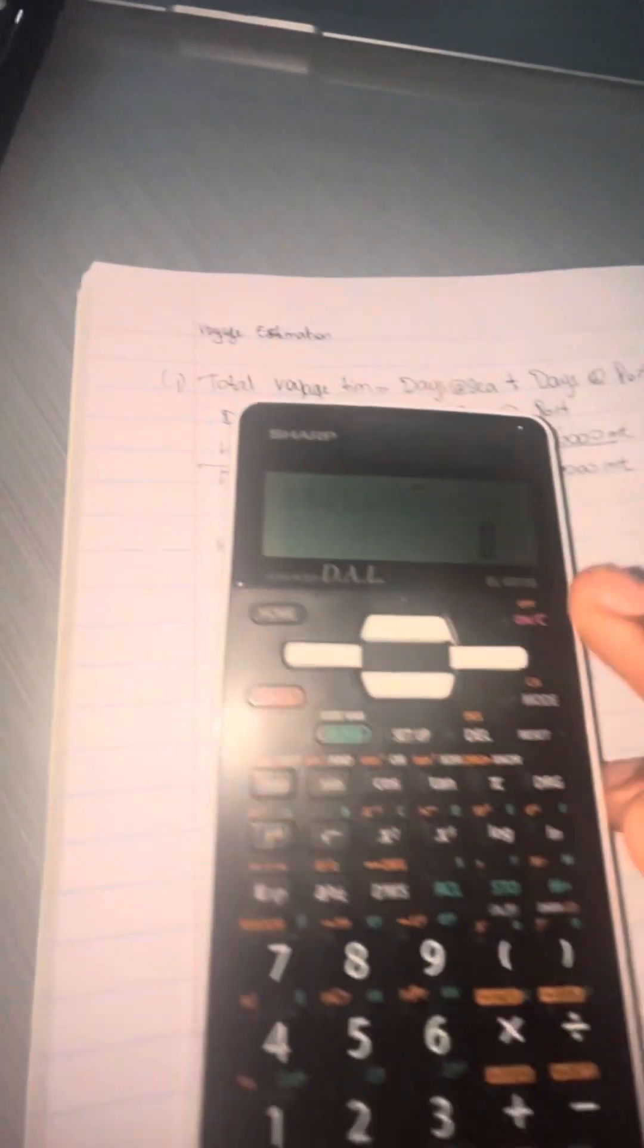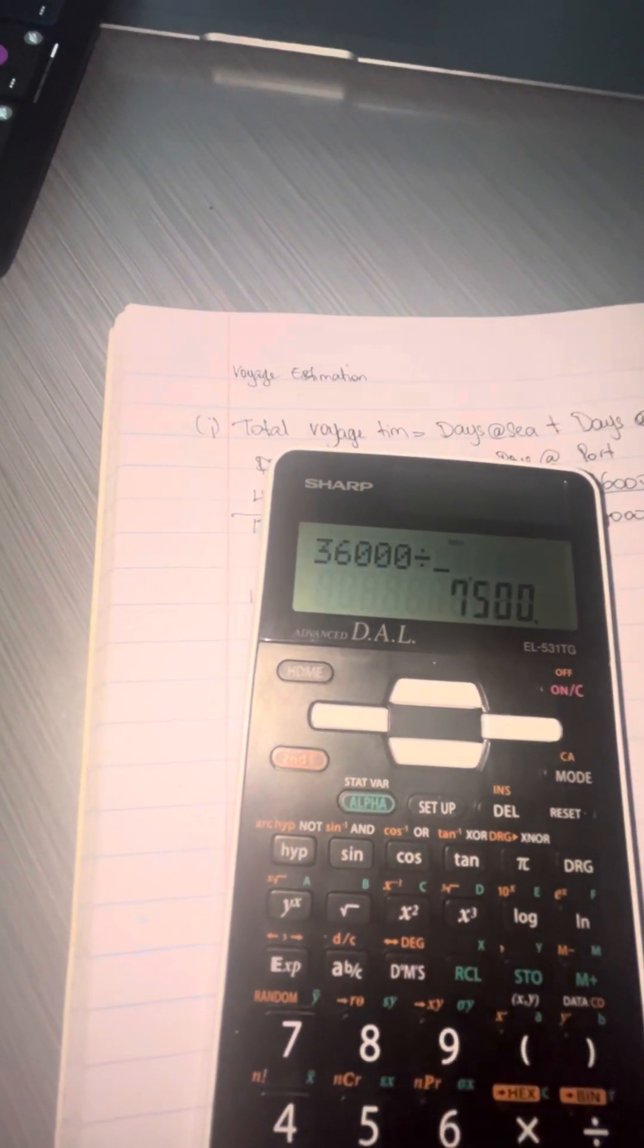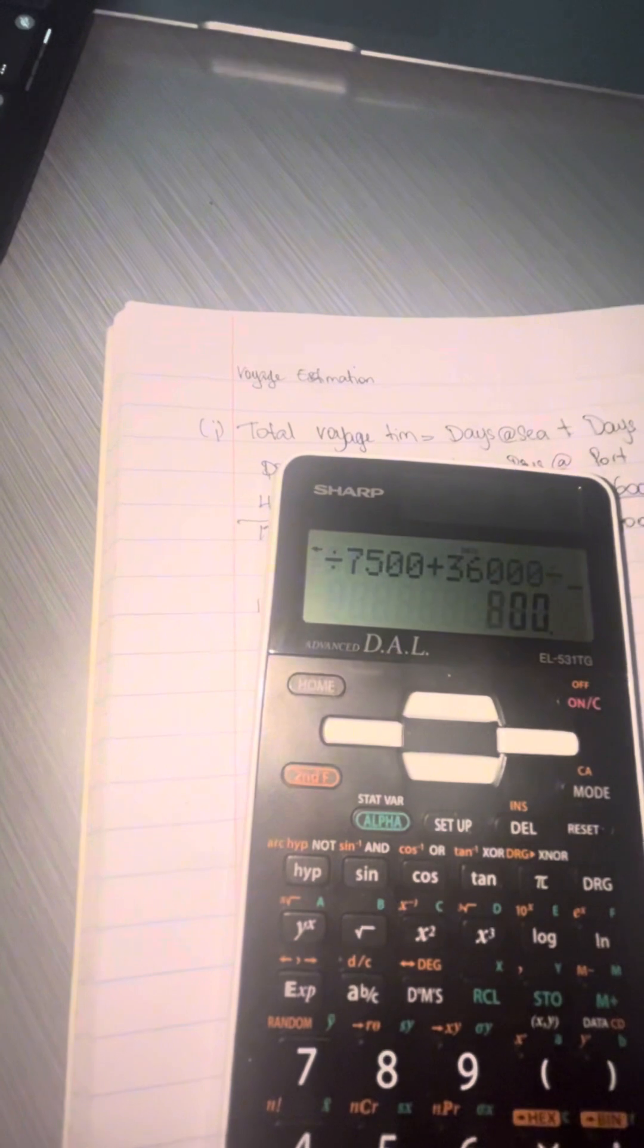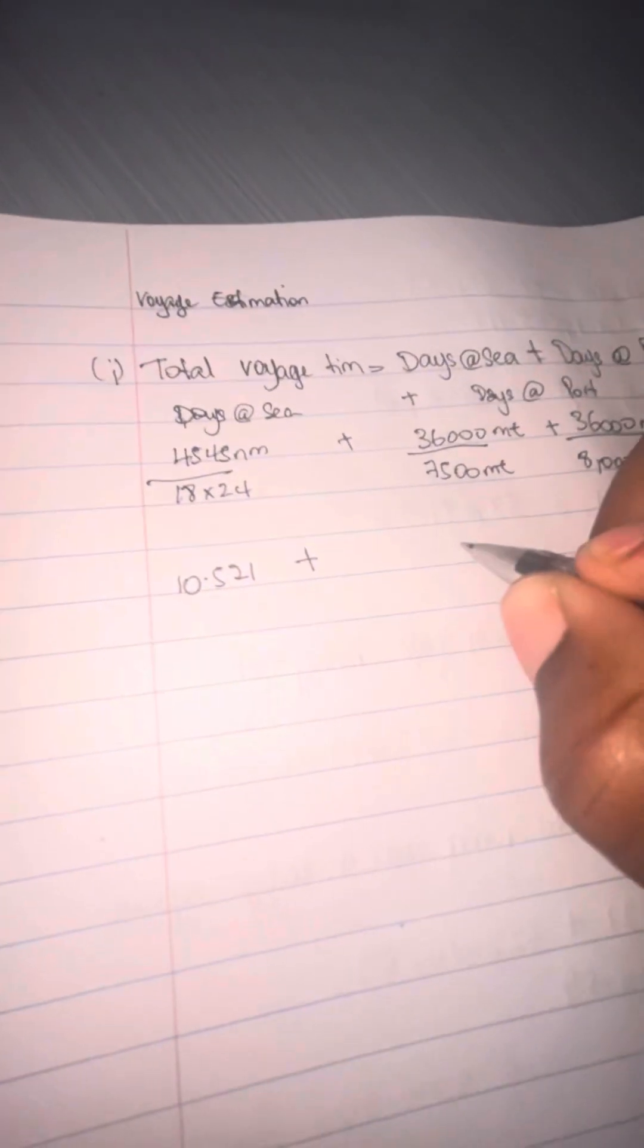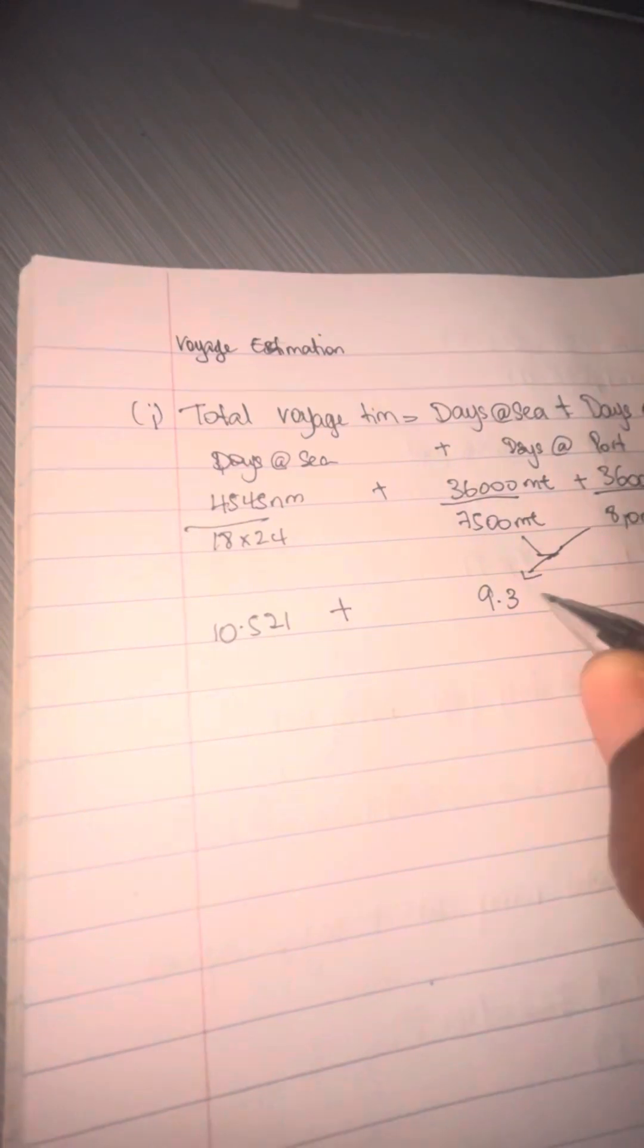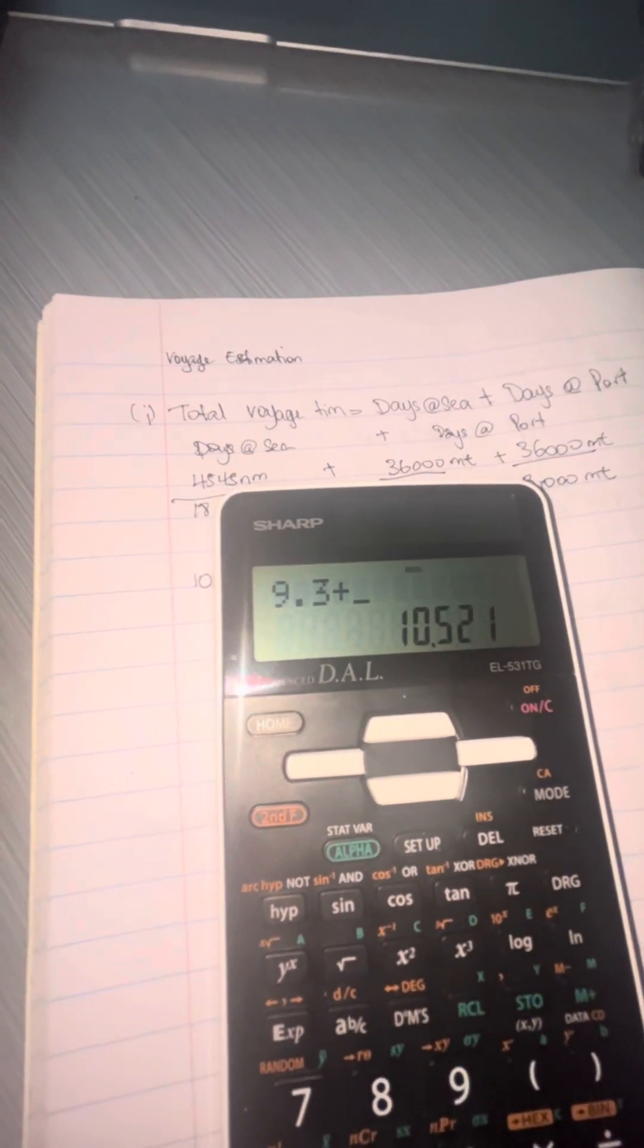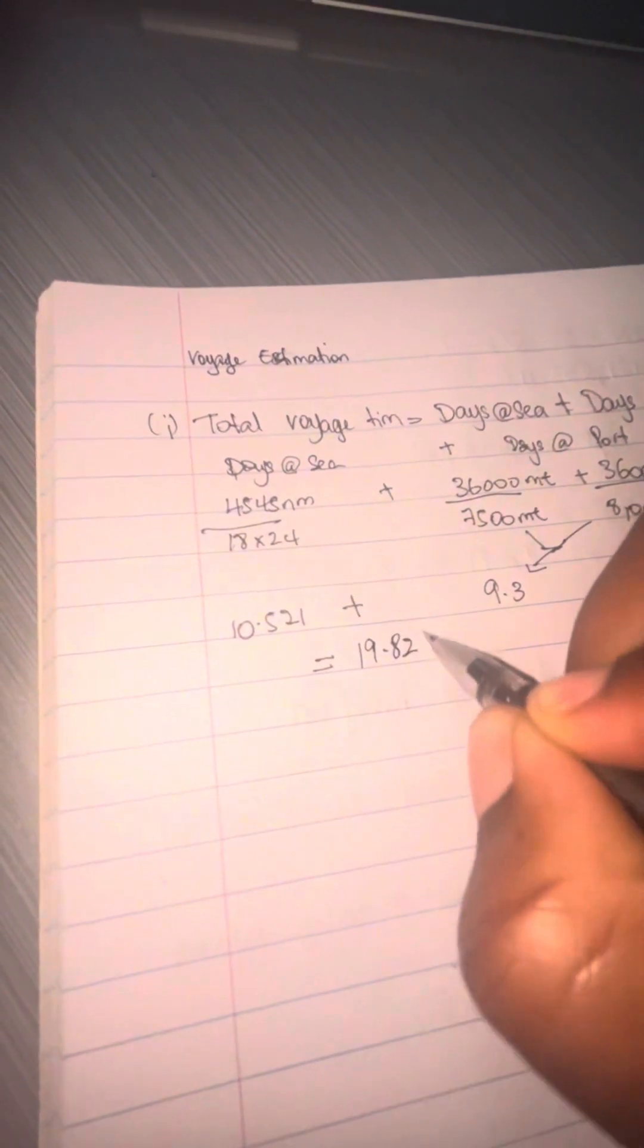For days at port, we're going to take the 36,000 metric ton of cargo over the 7,500 being loaded, and add that to 36,000 metric ton divided by 8,000 being unloaded. That gives us a total of 9.3. Both of those make days at port, so the final answer is 19.821—that is the total voyage time.